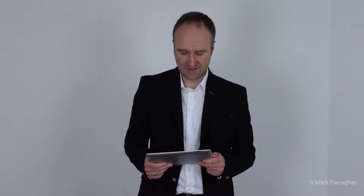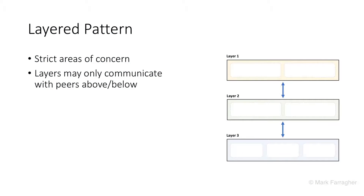Next pattern: the layered pattern. A layered pattern simply groups components and classes into distinct layers. Here's a layer, here's a layer, and here's a layer — three layers with communication channels between them. Layer 1 communicates with layer 2, layer 2 communicates with layer 3, and there is no communication between layer 1 and layer 3. To go from layer 1 to layer 3 you have to go through the middle layer. The layered pattern provides strictly separated areas of concern, creating a clean and logical architecture with formalized communication between direct neighbors only.